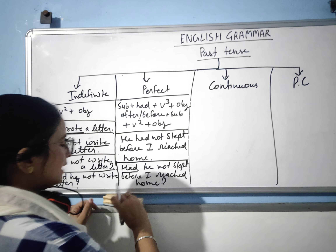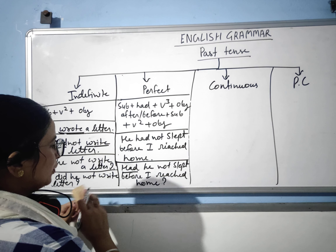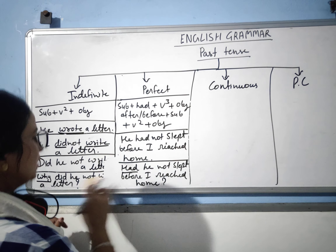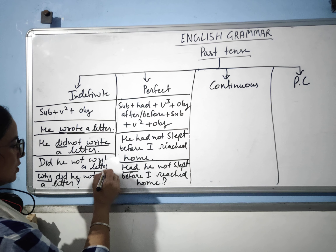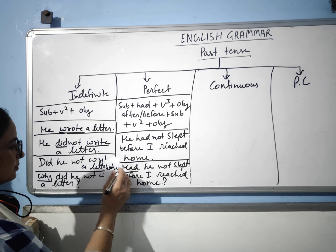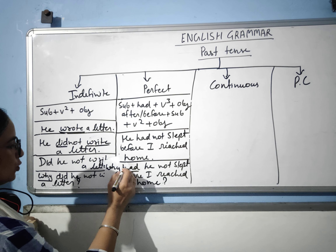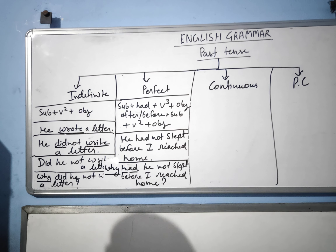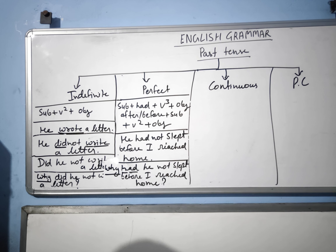In the second type of interrogative, you write the WH word at the beginning of the sentence. For example, using 'why': 'Why had he not slapped before I reached home?'